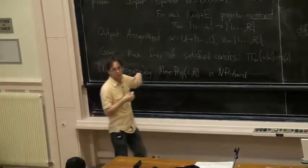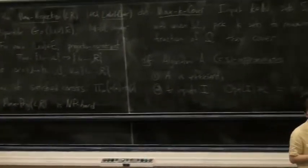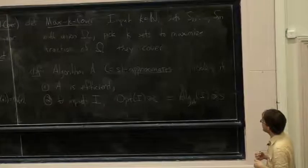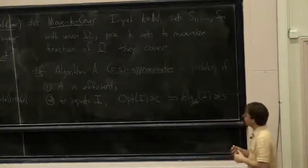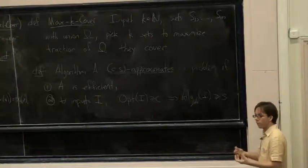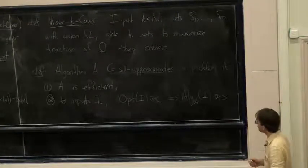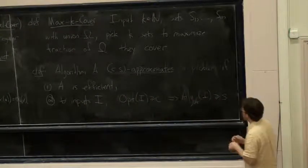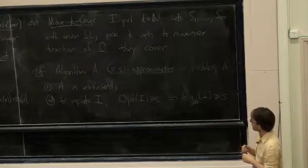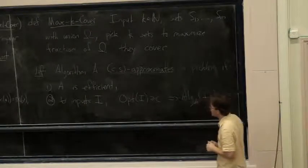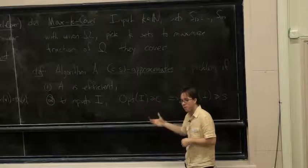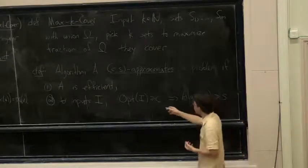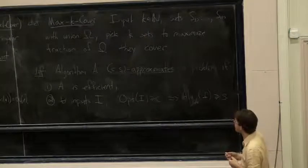We want to start with this problem and deduce hardness for Max K-Cover, which I introduced last time. Max K-Cover is a basic problem about sets and coverage, the cousin to the Set Cover problem. You're given a bunch of sets whose union is omega, a number k, and you have to choose k of the sets to cover as many elements as possible. An algorithm C-comma-S approximates an optimization problem if whenever it's given an instance whose optimum is at least C, the algorithm achieves at least S — C and S stand for completeness and soundness.